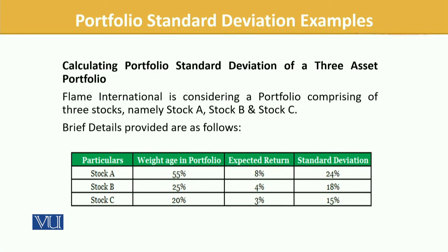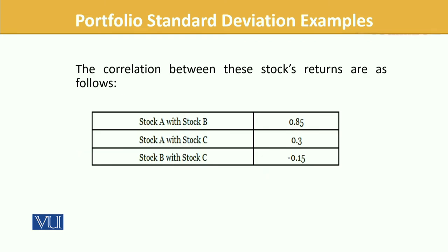Calculating the portfolio of a three-asset example: Claim International is considering a portfolio comprising three stocks A, B, C. Their weights, expected returns, and individual standard deviations are given. Following the path and logic we have just developed, you should be able to do it. Once done, look at how the outcome comes in.